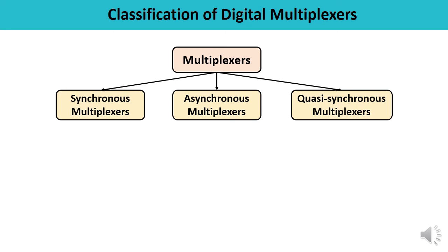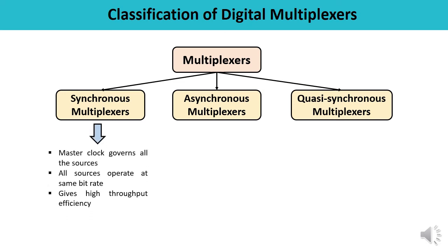The first category is synchronous multiplexers. In synchronous digital multiplexers, a master clock governs all the sources, meaning all sources operate at the same bit rate — they are in synchronism. Bit rate variations are completely eliminated. Synchronous multiplexing systems attain very high efficiency and throughput. However, they need elaborate provisions to distribute the master clock signal to all sources to maintain synchronism.